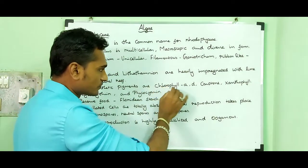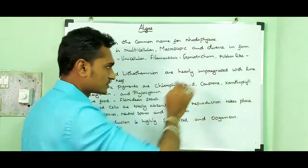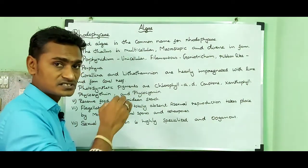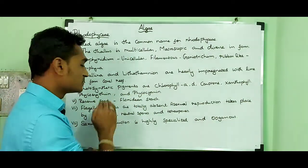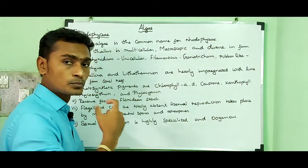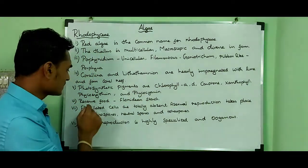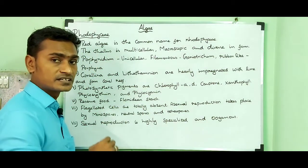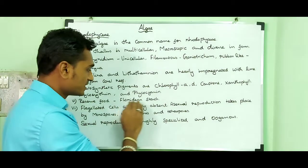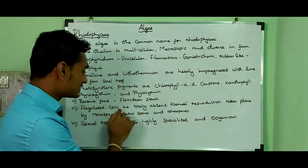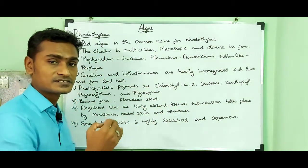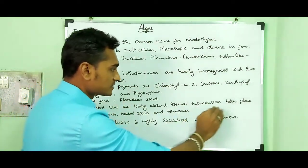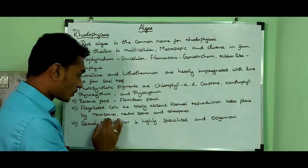Photosynthetic pigments like chlorophyll A, D, carotene and xanthophyll are present. In addition, phycoerythrin (red pigment) and phycocyanin (blue pigment) are present in red algae. The reserve food material is floridian starch — Rhodophyceae stores reserve food material as floridian starch. Flagellated cells are totally absent in asexual reproduction.